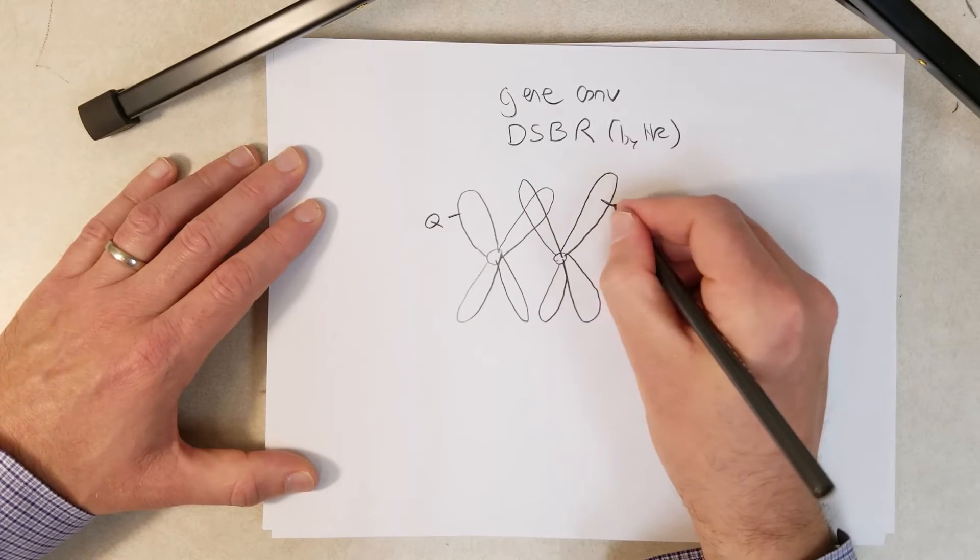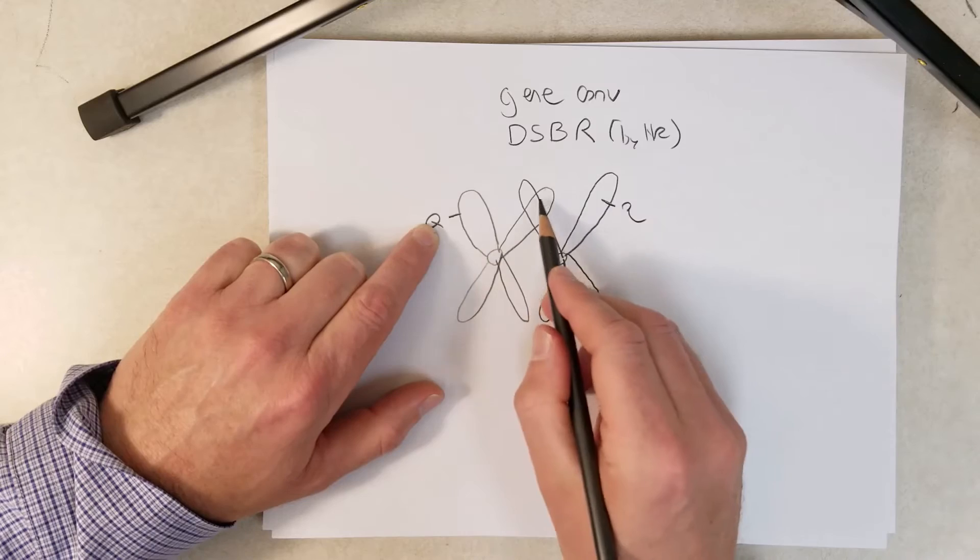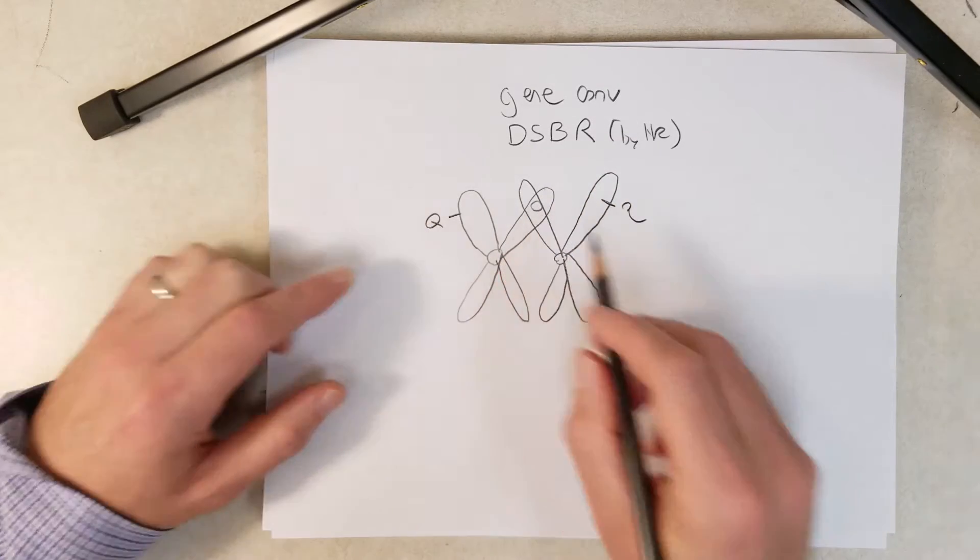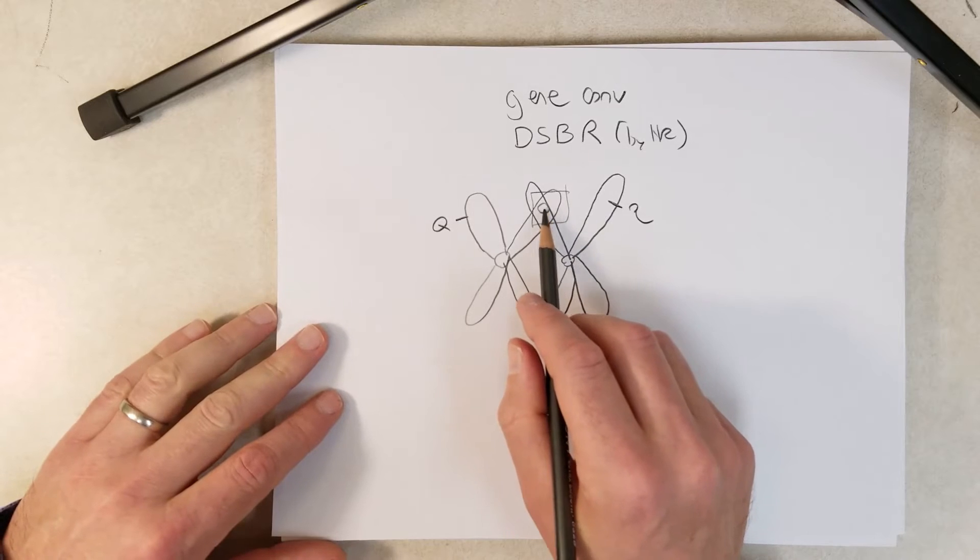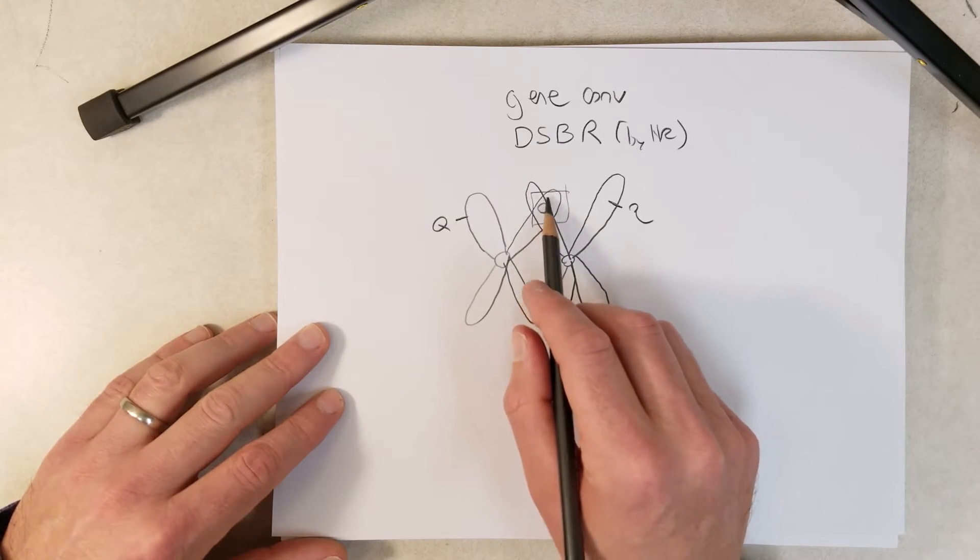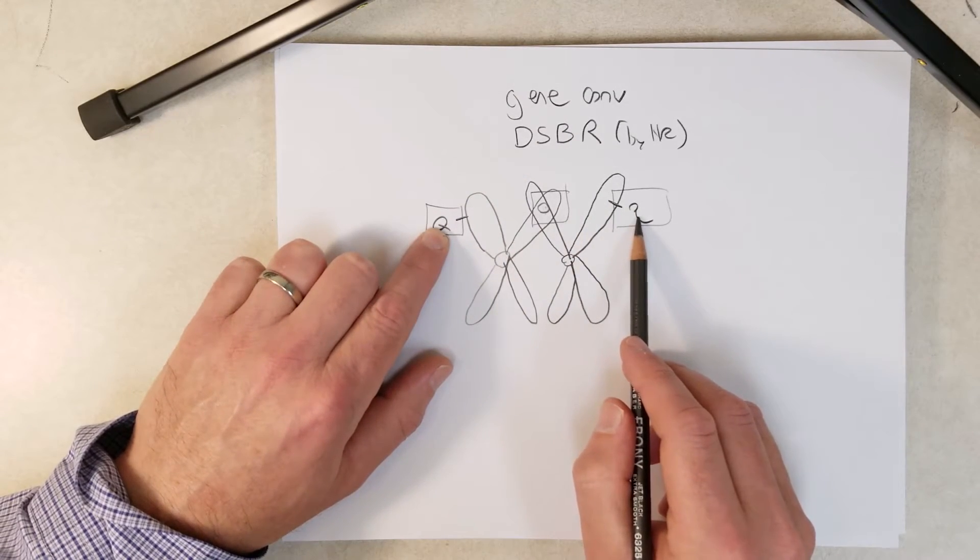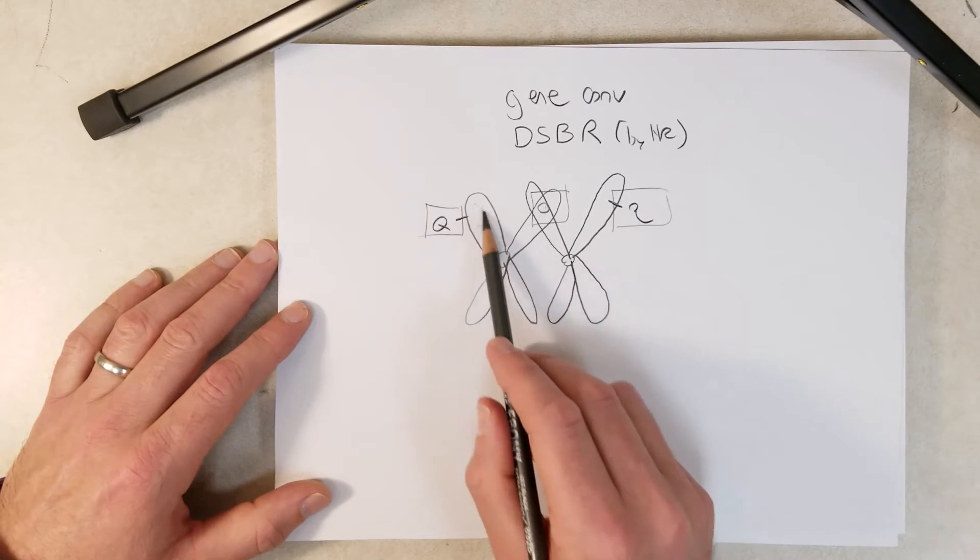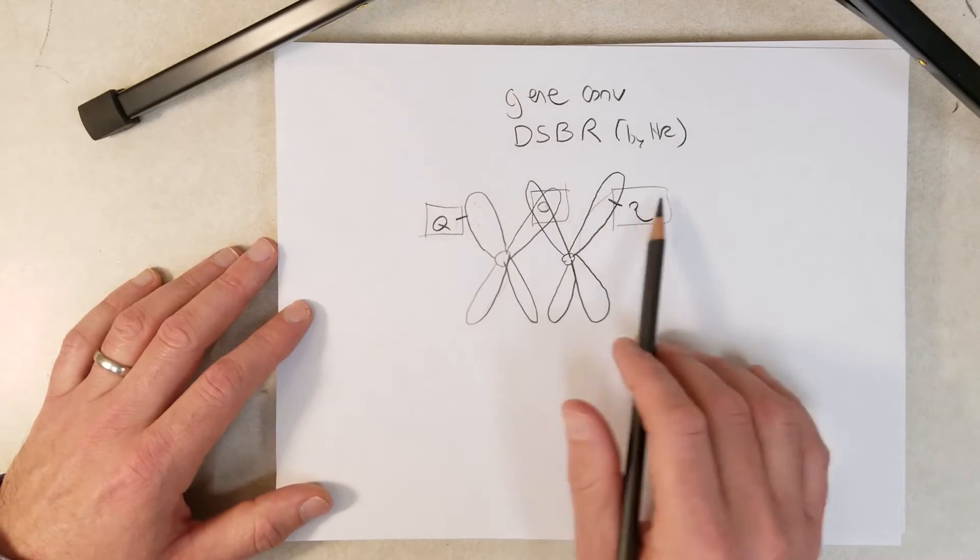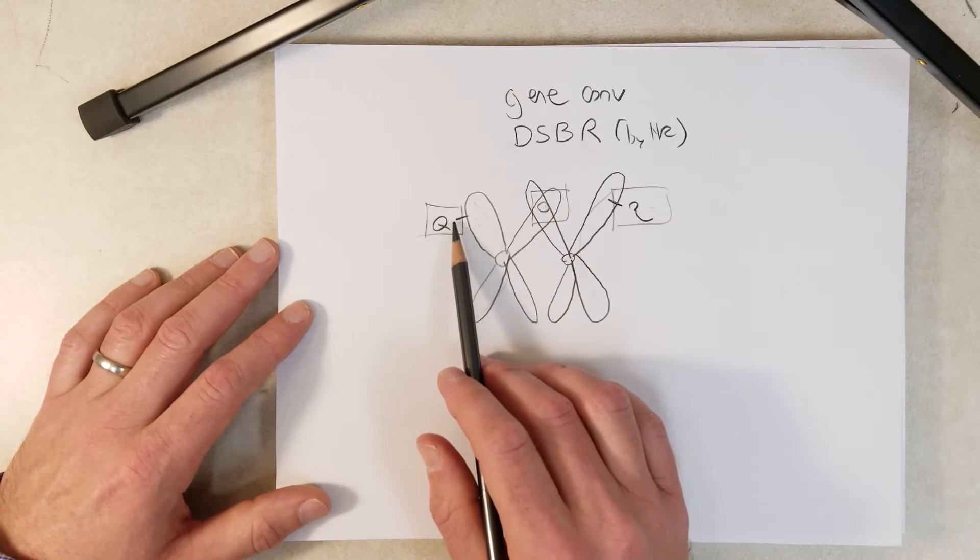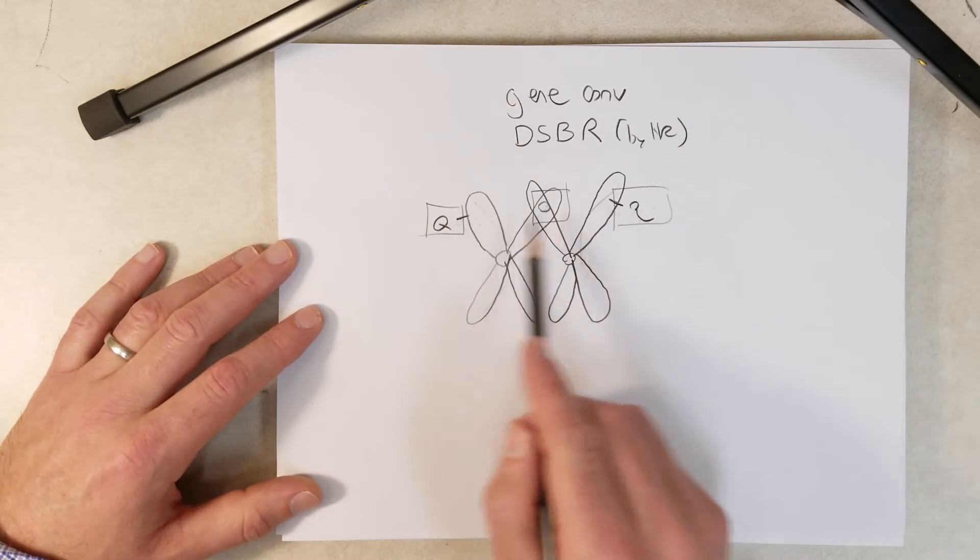It could even be caused by SPO11 to initiate a crossover. And now that double strand break needs to be repaired. And let's say that double strand break happened really close to the Q gene, even in the Q gene, right here. So this area right here, near the double strand break, would be affected by gene conversion.